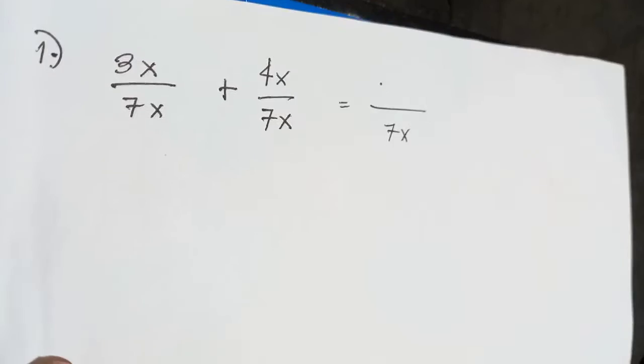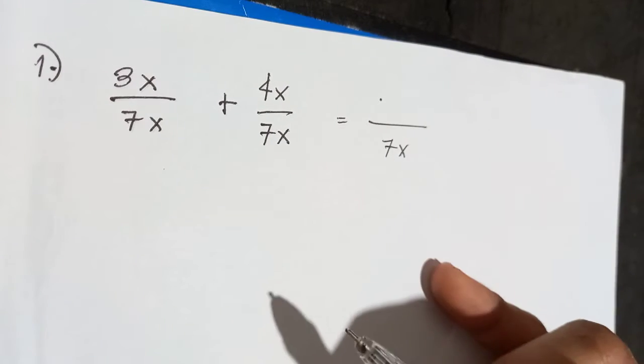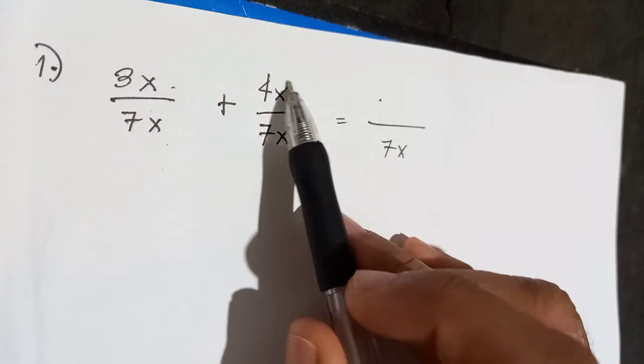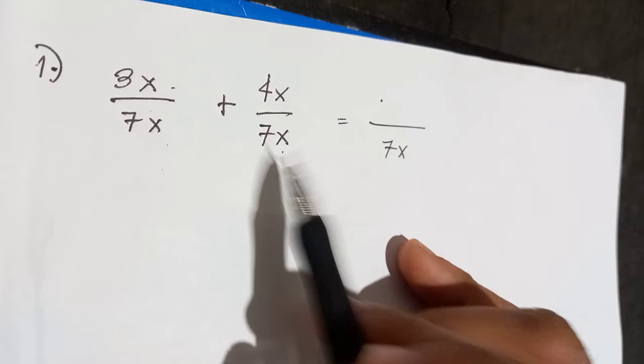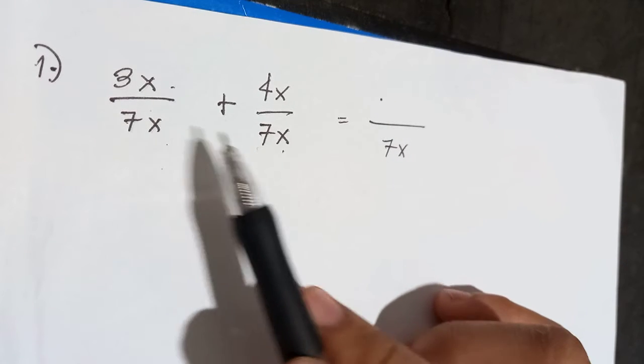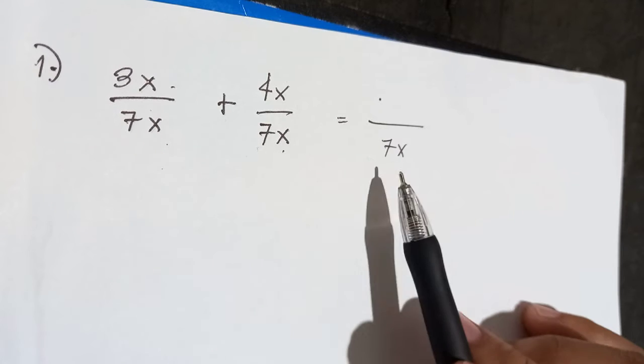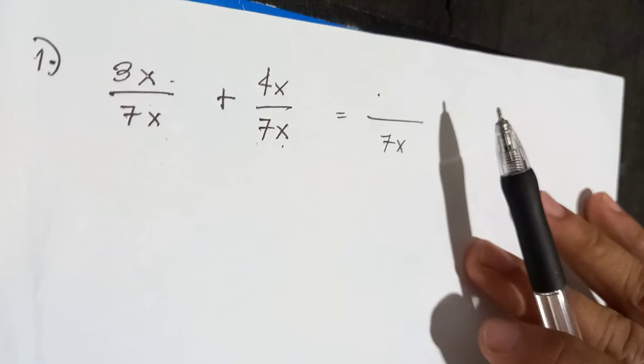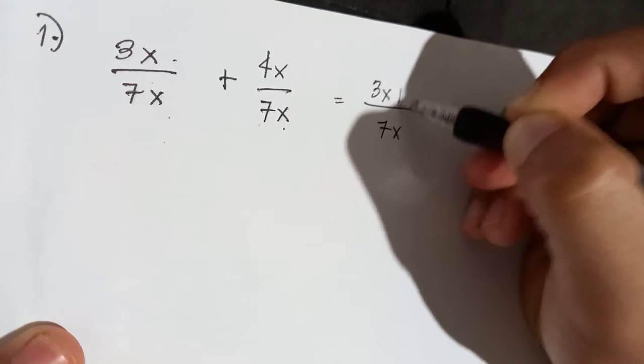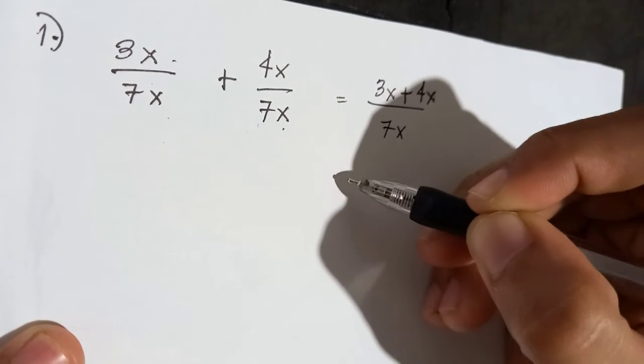For example, 3x over 7x plus 4x over 7x. So it is obvious that 7x is the common denominator. So copy 7x. Then simply add the numerators. So 3x plus 4x. Simplify.